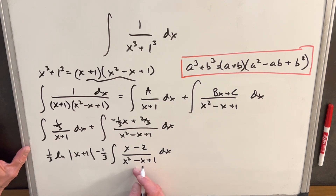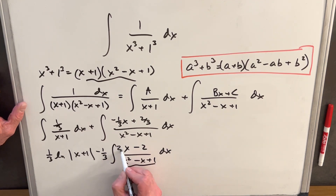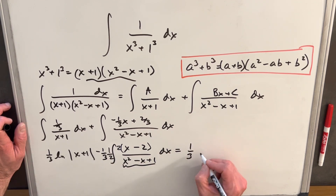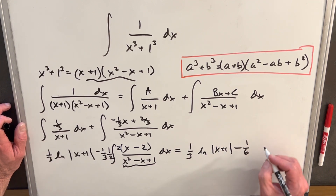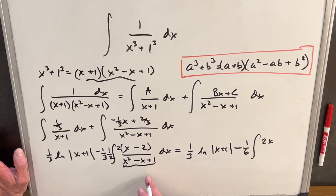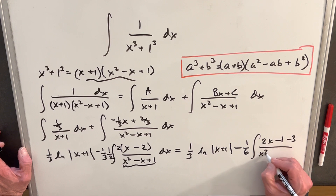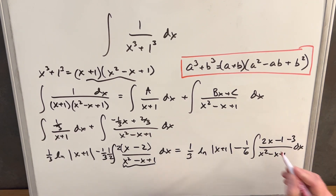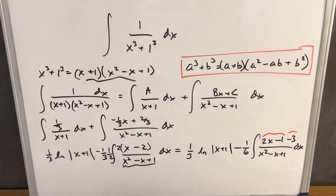This is set up nicely for a u-substitution. If we let u equal x squared minus x plus 1, the derivative is 2x minus 1. To set this up, we multiply by 2 and then by a half, rewriting the numerator as 2x minus 4, which we write as 2x minus 1 minus 3. This gives us a 1 sixth out front, and we notice this piece is perfect for u-substitution while we have a minus 3 hanging around. I'll split this into two integrals, clean up the board, and continue.